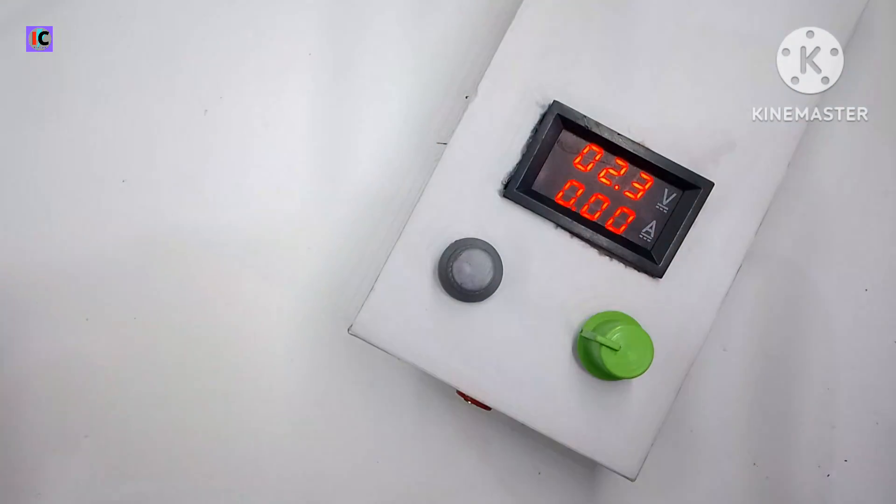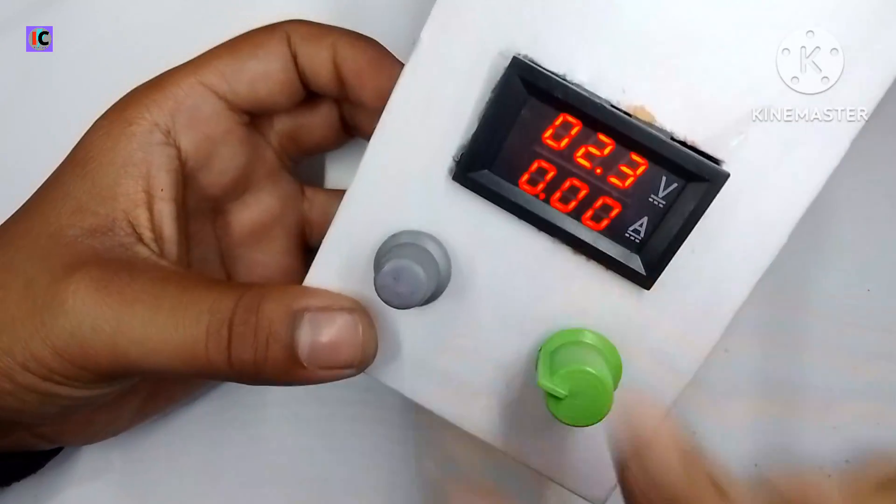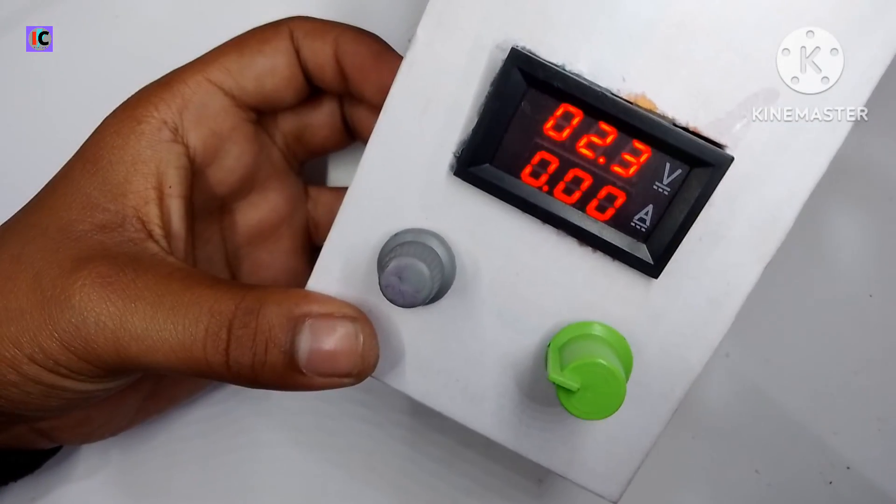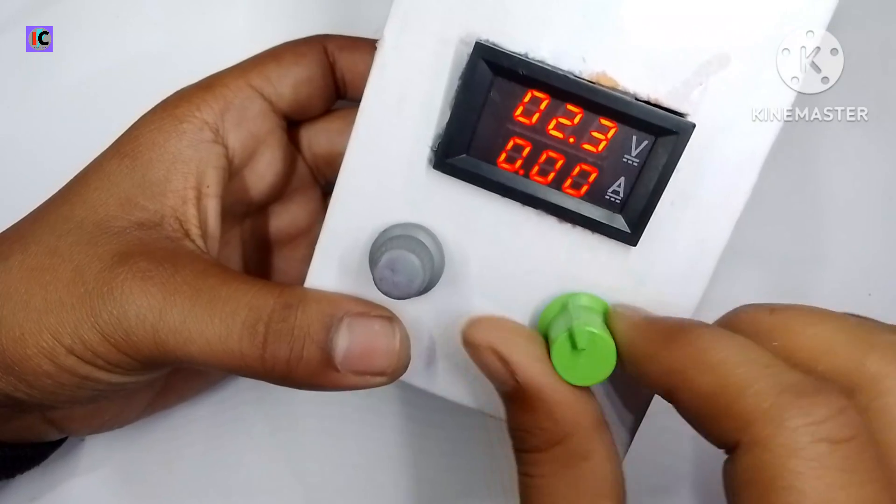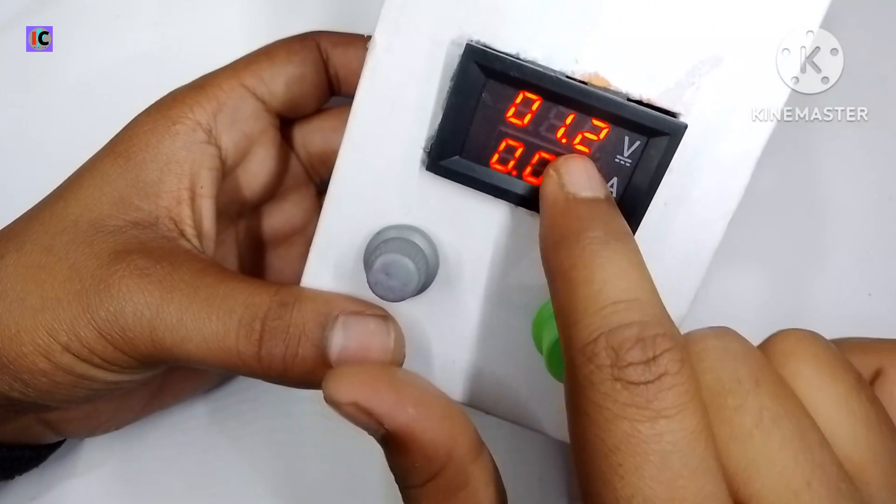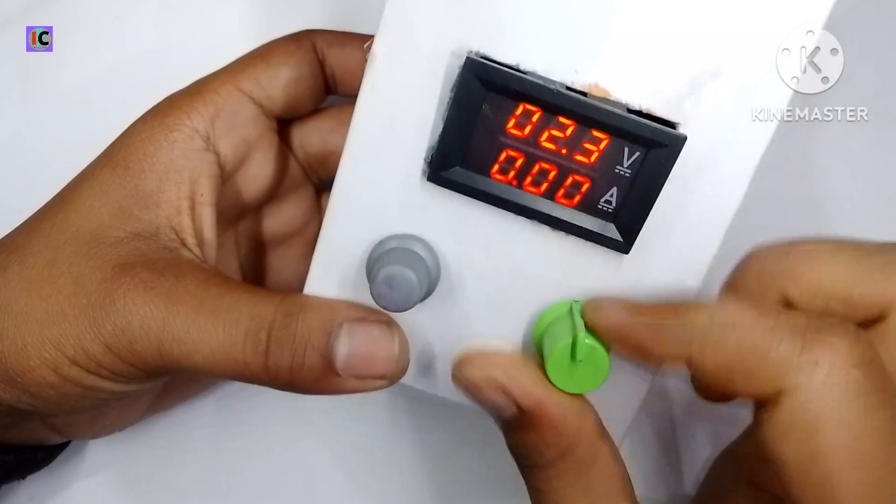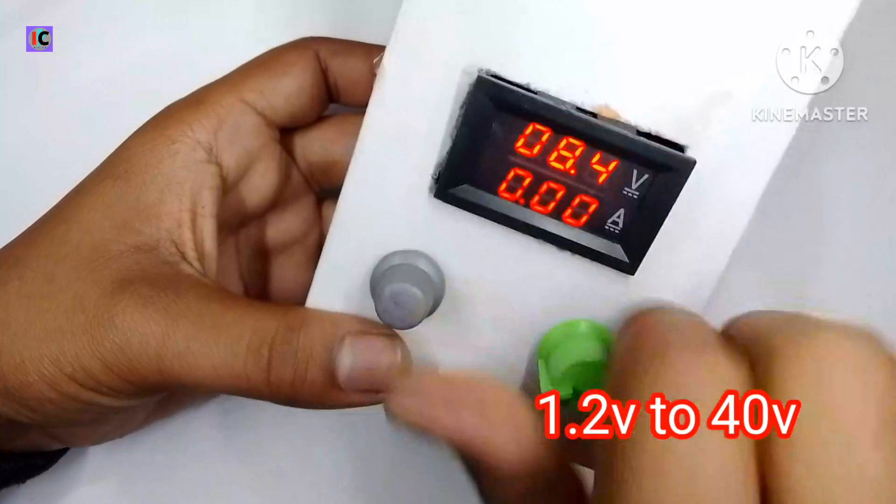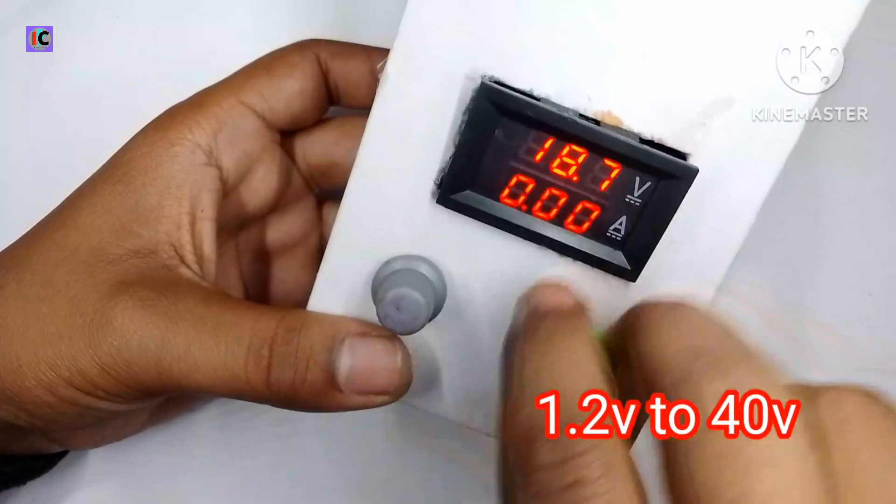And you can see when I turn on the power supply with the power switch, the voltage is showing 2.3 volts. So here we can adjust this voltage from minimum 1.2 volts to up to 34.0 volts.